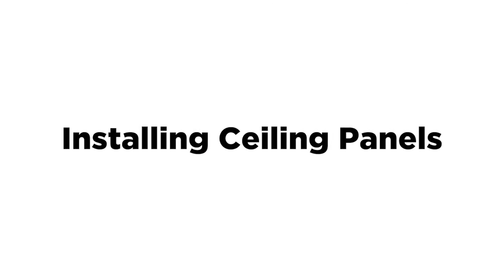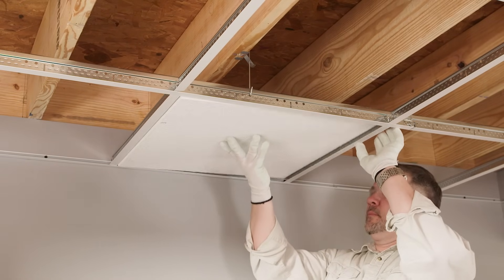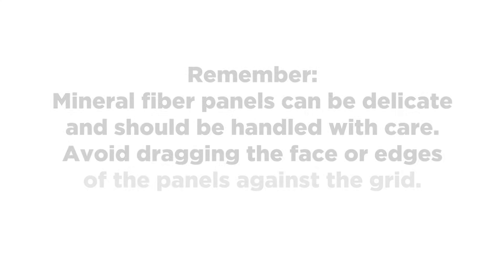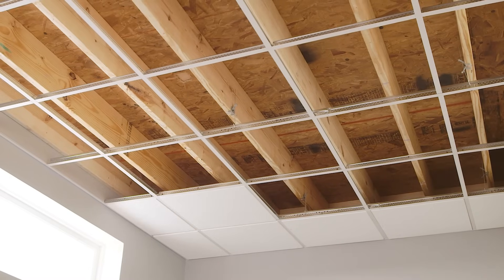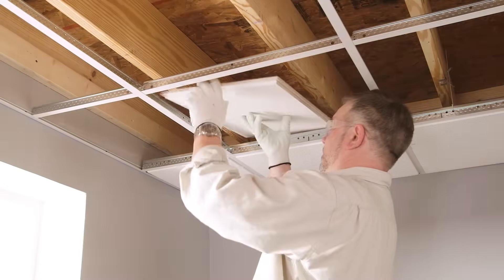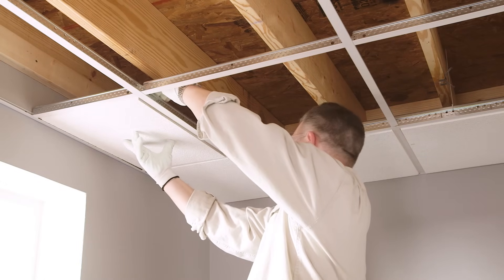Installing ceiling panels: Wear clean gloves or wash your hands before you handle the ceiling panels to prevent dirt smudges on the tiles. Lift the panel at an angle up through the grid. Gently drop into place. Remember, mineral fiber panels can be delicate and should be handled with care. Avoid dragging the face or edges of the panels against the grid. Start with border panels and work towards the center of the room. If a tile cannot be installed in this manner, an adjacent cross T can be removed to allow the tile to be positioned. The cross T should then be reinstalled. If there's an obstruction in the area where you are inserting a ceiling tile, you may need to lift the ceiling tile through an adjacent opening and gently move it across the back of the grid into place.